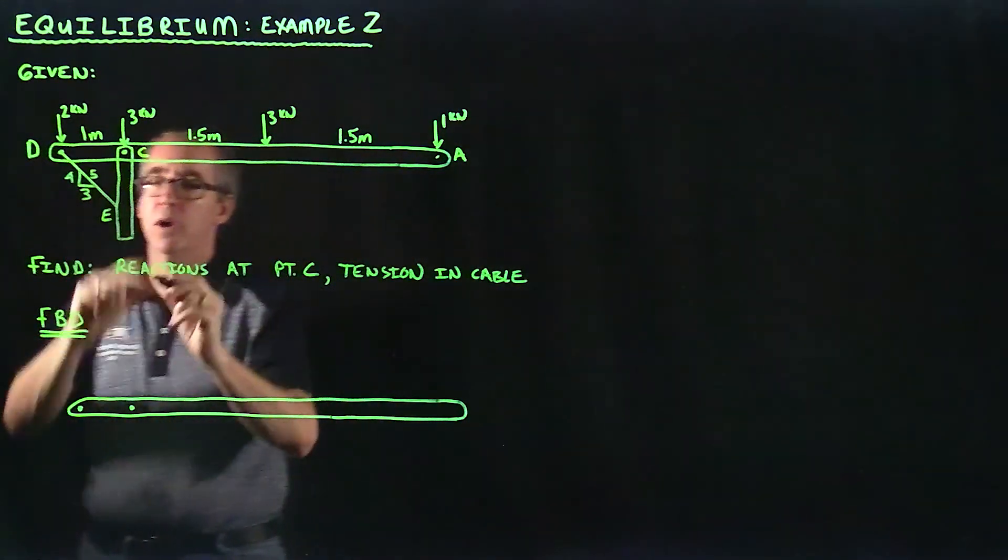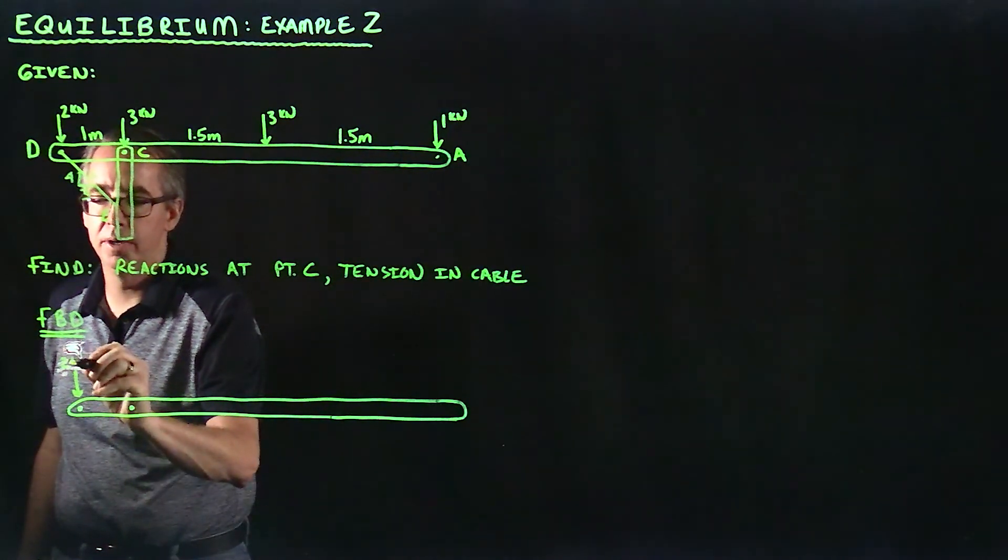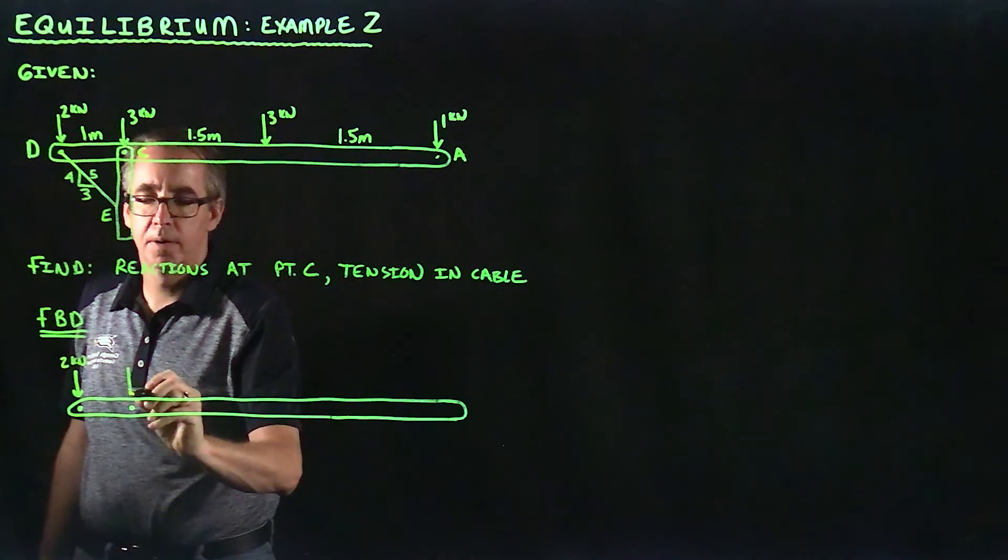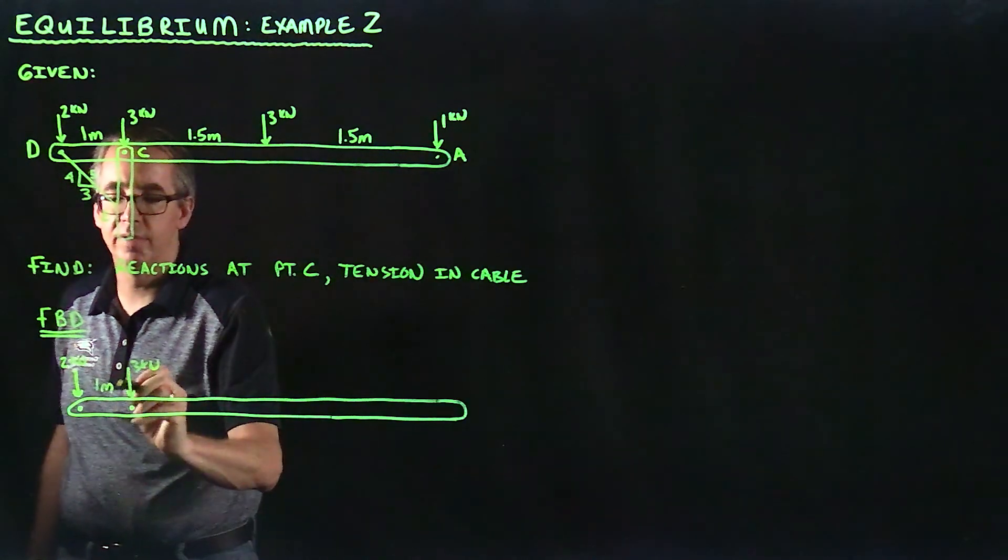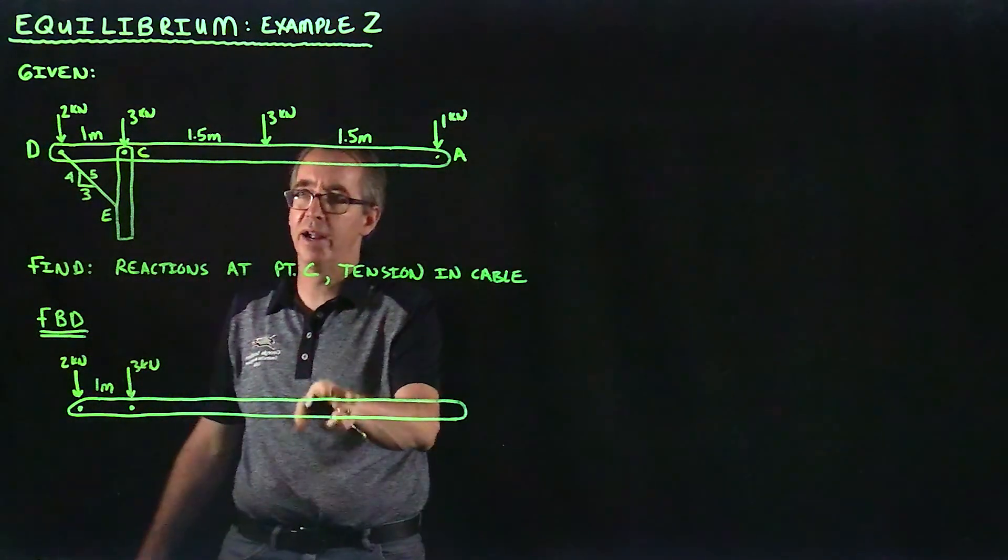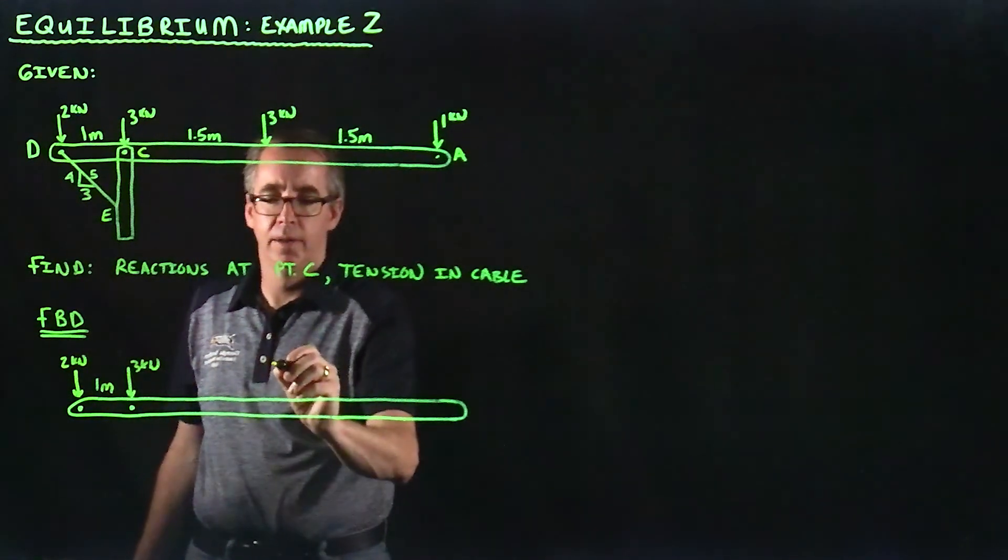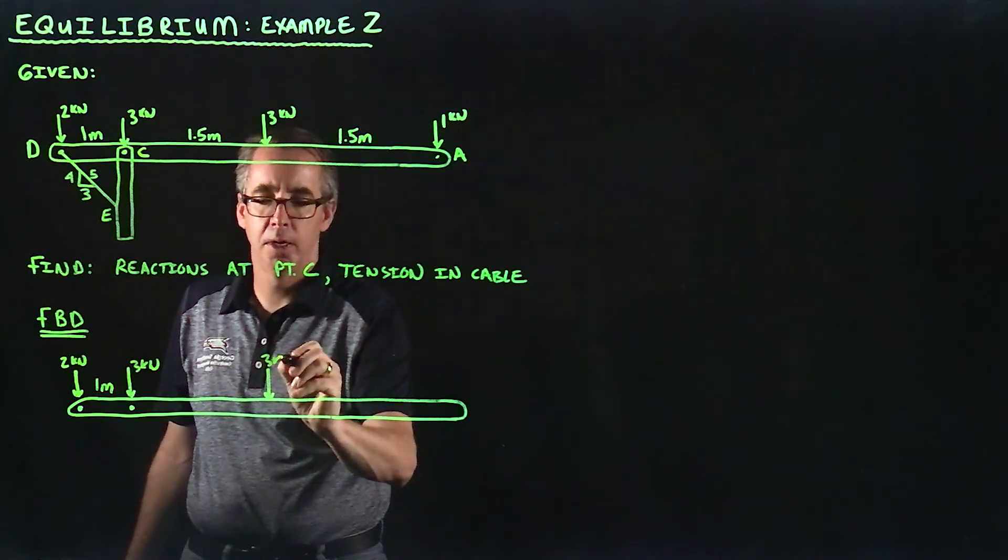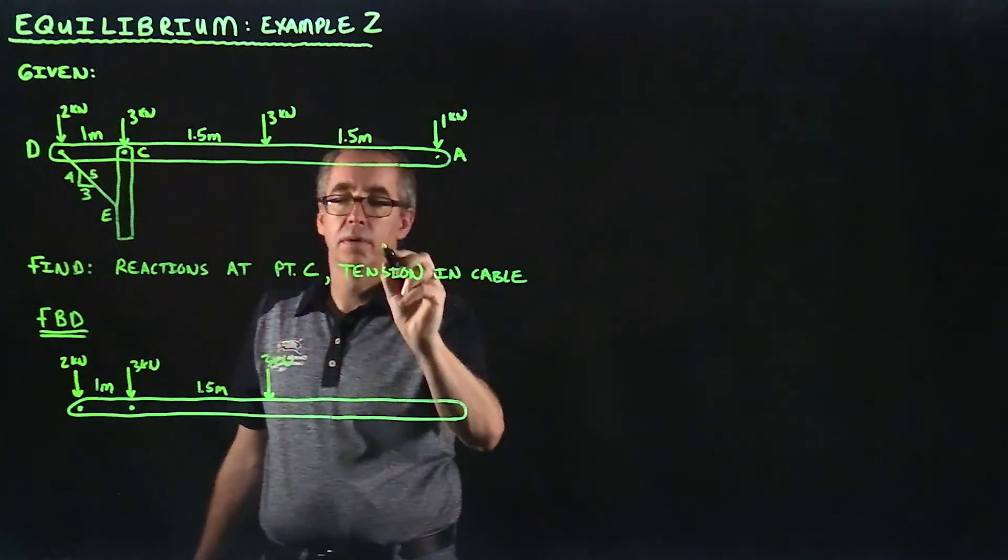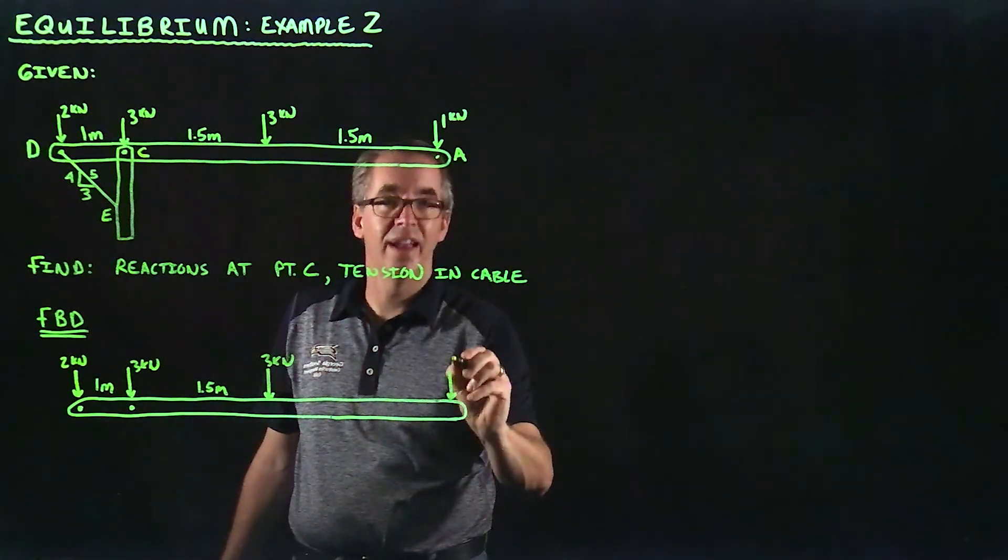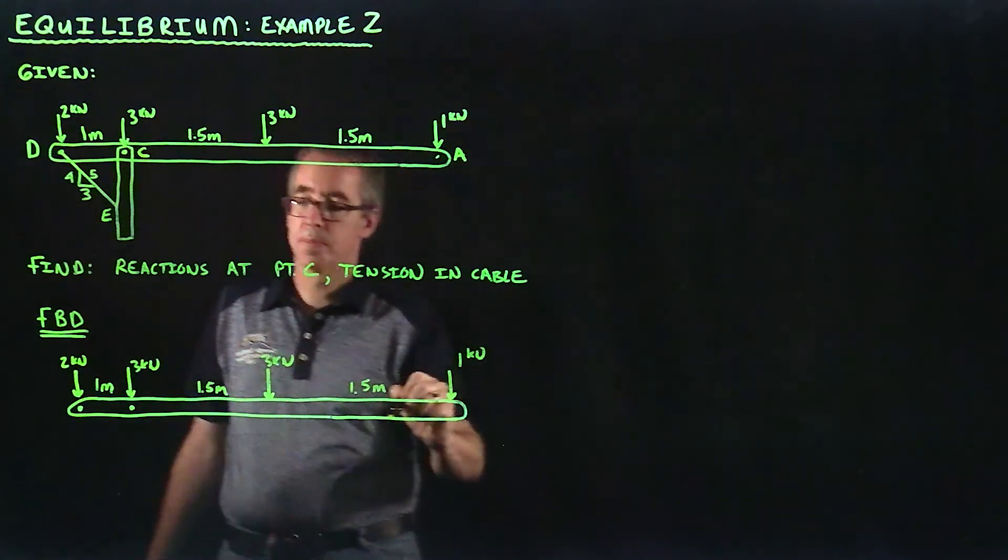Let's start by putting in our known forces. At this point here, I've got a force of two kilonewtons. Here, I've got a force of three kilonewtons. My distance between those, I'll rewrite the distances. Over here, I've got another force of three kilonewtons, and that's at a distance of 1.5. My last force over here, point A, is a one kilonewton force at a distance of 1.5 meters as well.